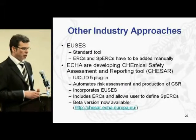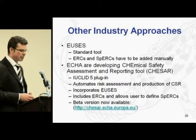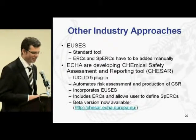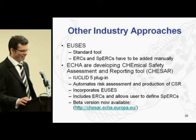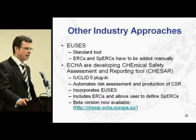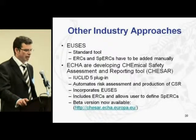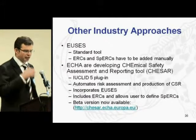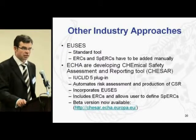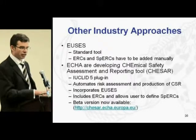ECHA are also developing the Chemical Safety Assessment and Reporting Tool, CHESAR. This is an IUCLID 5 plugin and the intention is that it will automate risk assessments and the production of the CSR. It incorporates E-USES, includes ERCs, and allows users to define and plug in SPERCs. The beta version is now available.